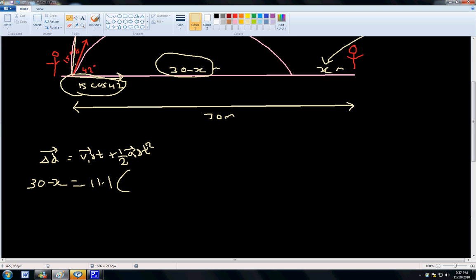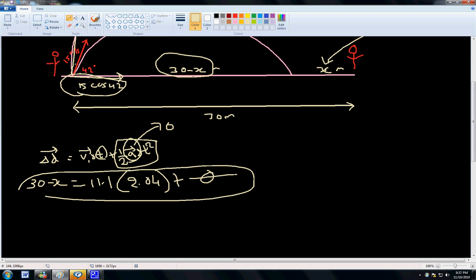You just found the time, 2.04. And you really don't need to do this part right here because acceleration is 0. Horizontal acceleration is 0, so it'll be plus a big 0. Right here. So if you type the whole thing in the calculator, you get x equals 7.3.